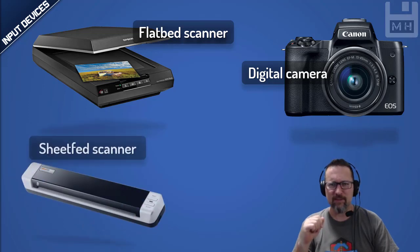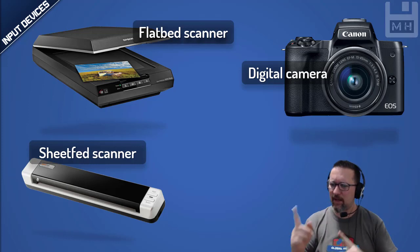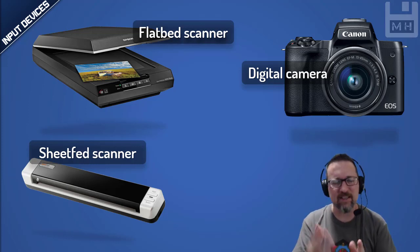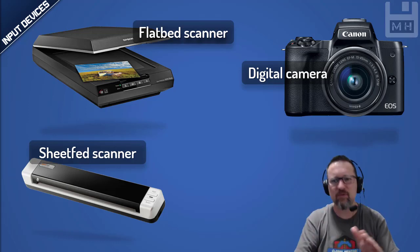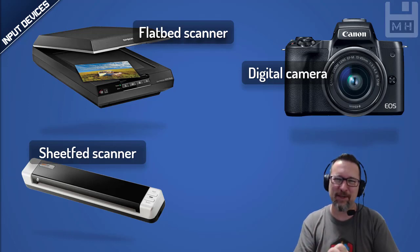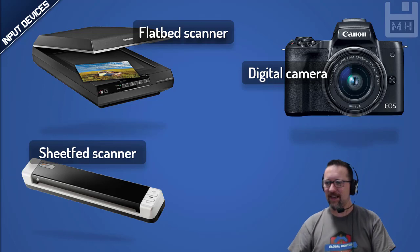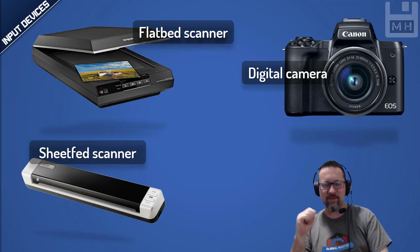A sheet-fed scanner is for individual pieces of paper — it feeds pages through one after the other. You can't put a book through a sheet-fed scanner! That would be quite funny — hashtag sheet-fed fail.